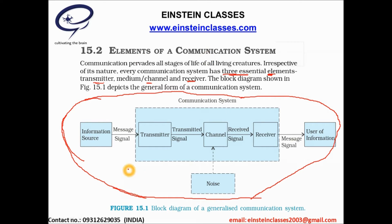This block diagram represents the generalized communication system. Any communication system has three essential elements: the transmitter, the channel, and the receiver. The information source produces a message signal, which passes through the transmitter. The transmitter sends the signal through a channel, the receiver picks it up, and finally the user receives the signal from the receiver.